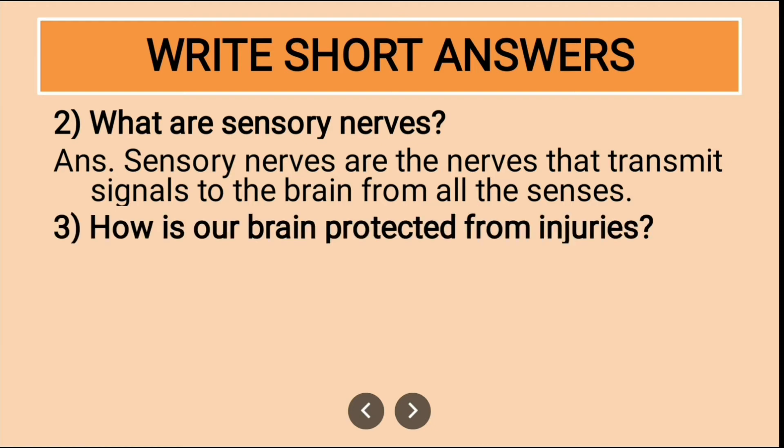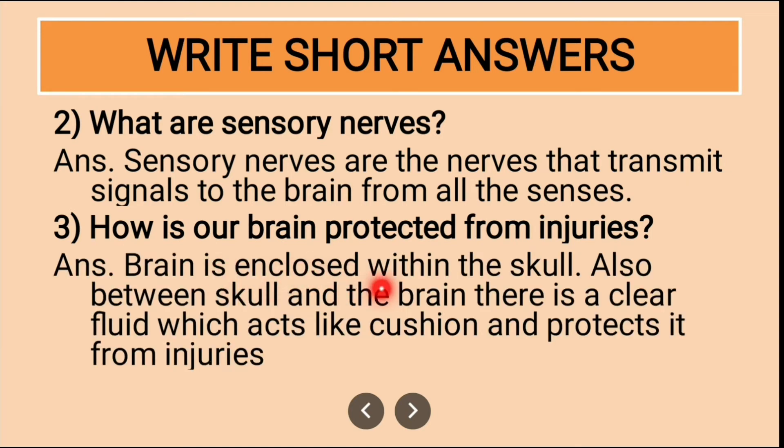Third question: how is our brain protected from injuries? Brain is enclosed within the skull. Also, between skull and brain, there is a clear fluid which acts like a cushion and protects it from injuries.